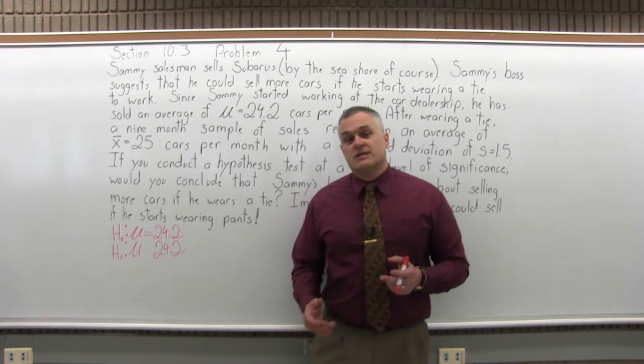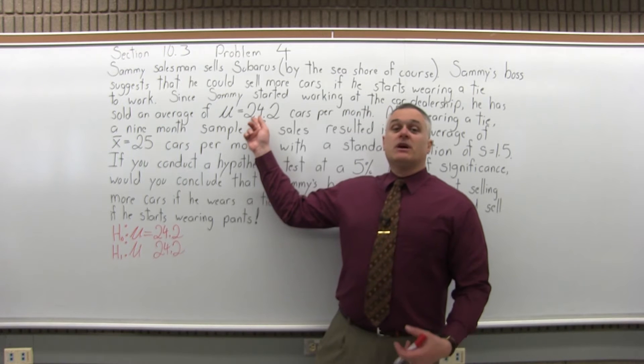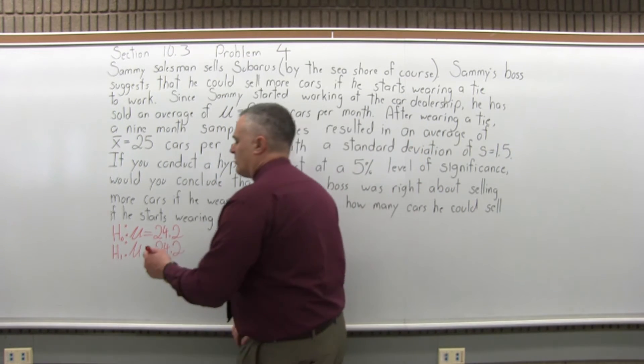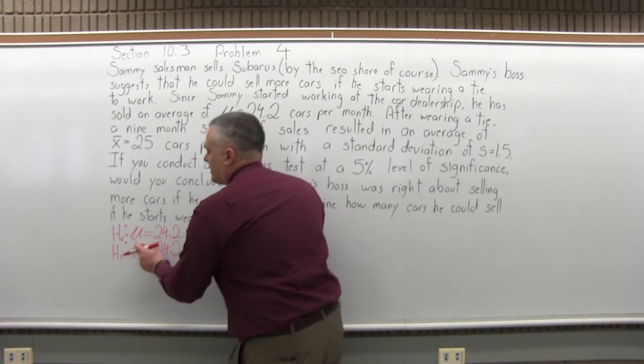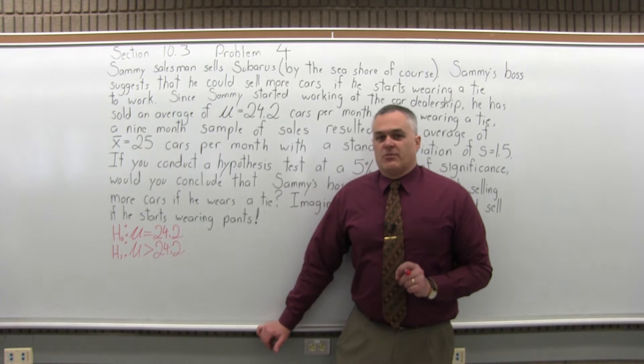Well, for this problem, what are we testing? We're testing that the average number of cars sold per month is going to become greater. He's going to be able to sell more cars when he starts wearing a tie. He'll look more professional. So the average will become greater than 24.2. That's our alternate hypothesis.